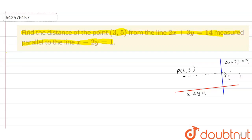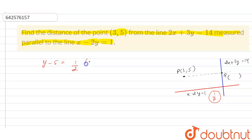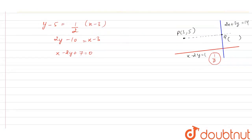We know that the slope of the line x - 2y = 1 is 1/2. Using point-slope form, we write: y - 5 = (1/2)(x - 3). Solving this gives 2y - 10 = x - 3. Finally, we get the equation x - 2y + 7 = 0.